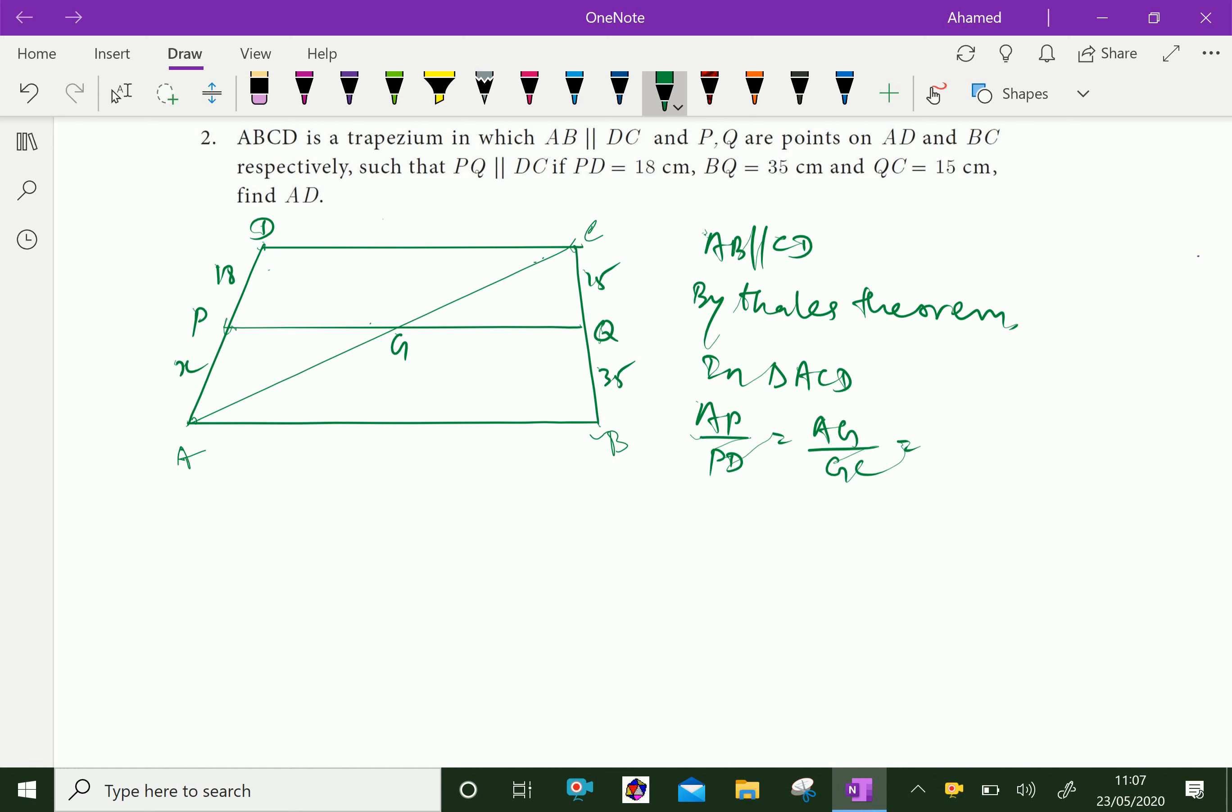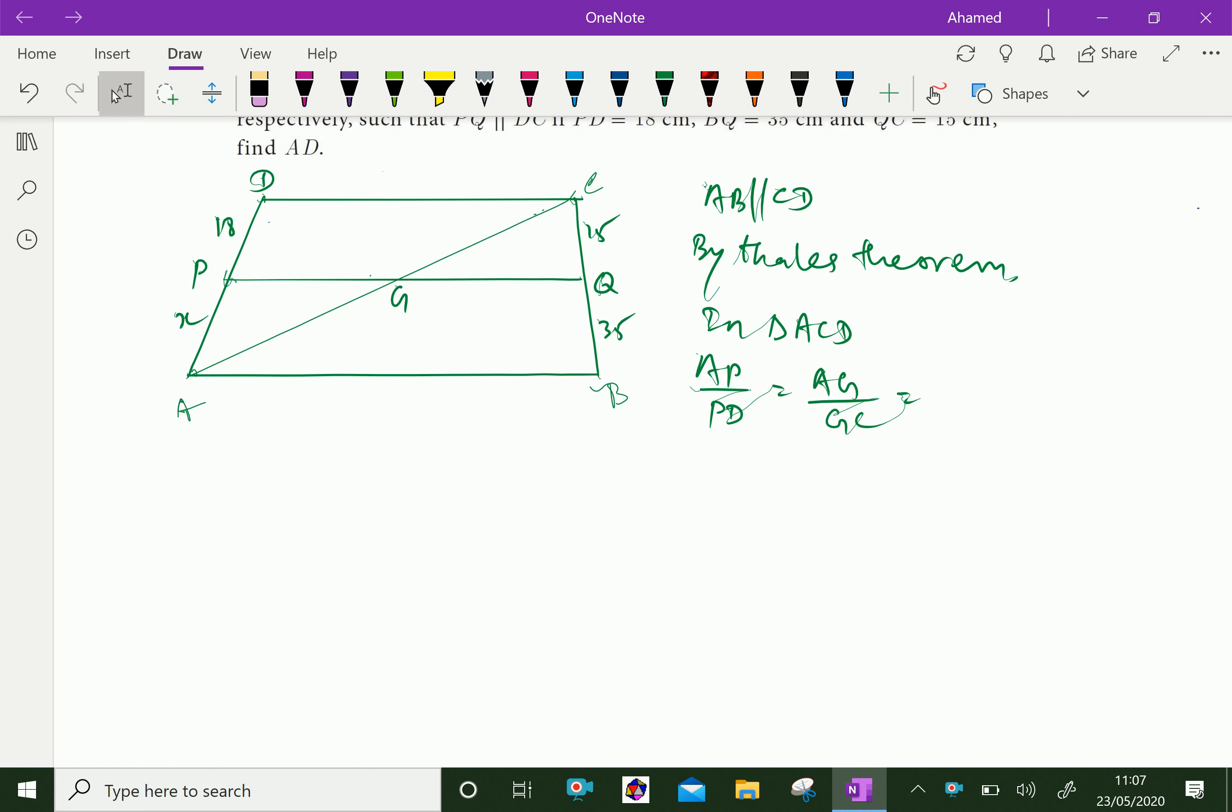Now, we can write in the values, AP is X we let, then PD is 18. I call AG by GC. Let it be 1.